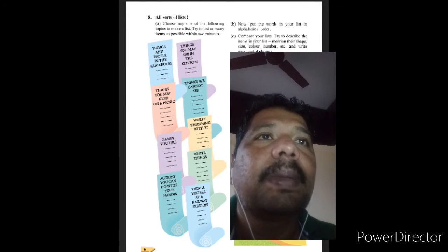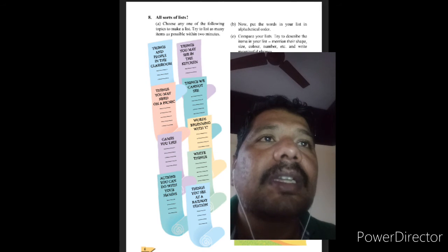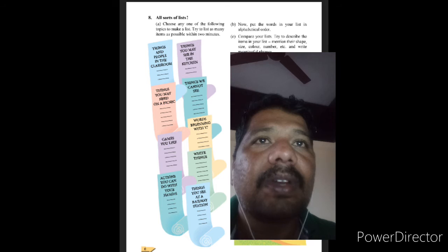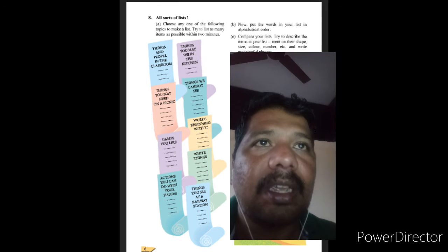Question C is: Compare your list. Try to describe the items in your list. Mention their shape, size, color, number, etc., and write meaningful phrases. So you just solve question A and question B, then we will think over it about the next one.